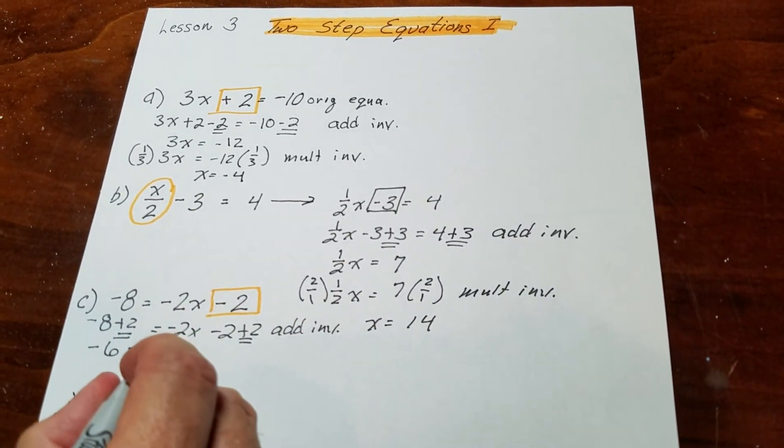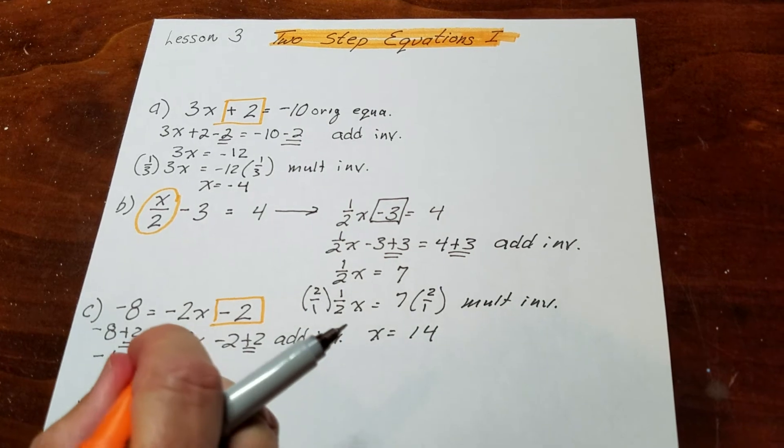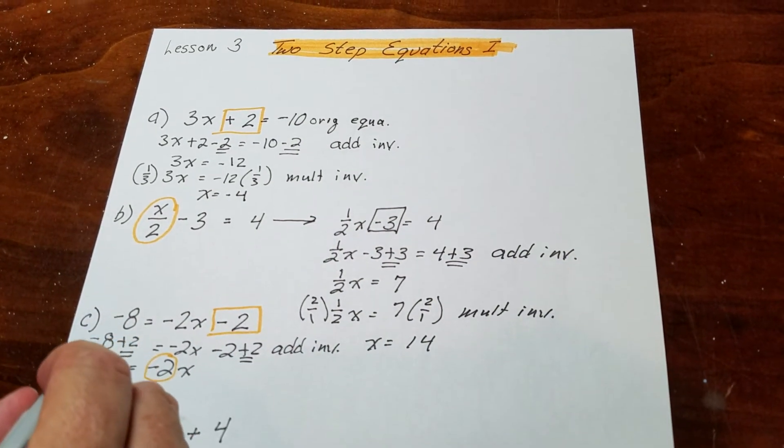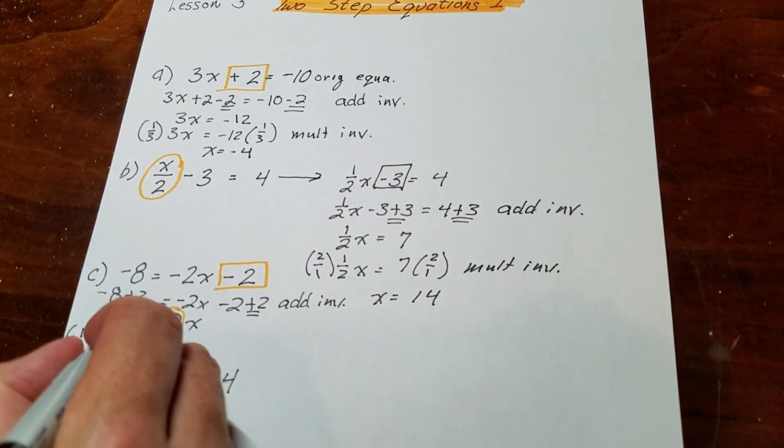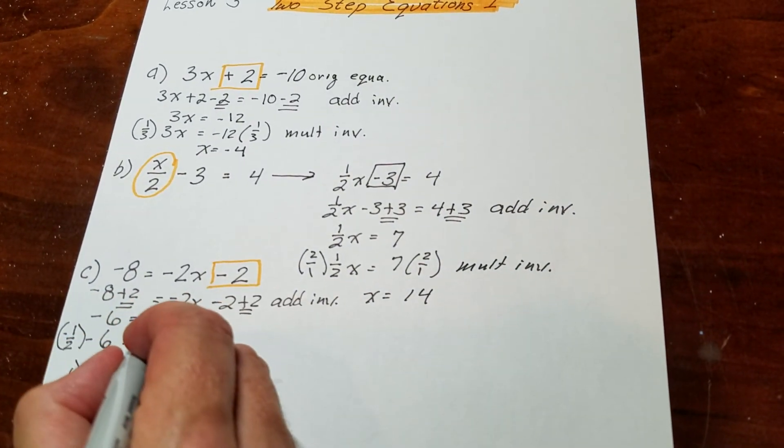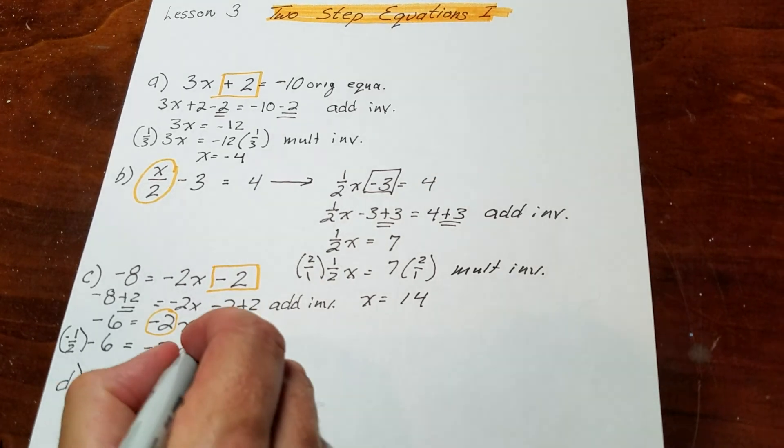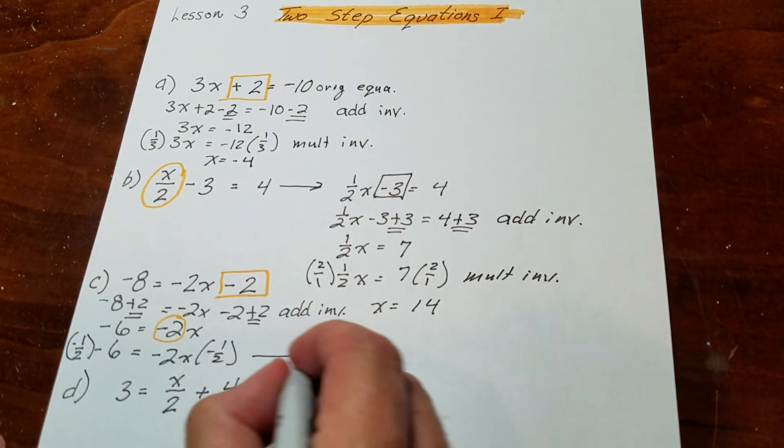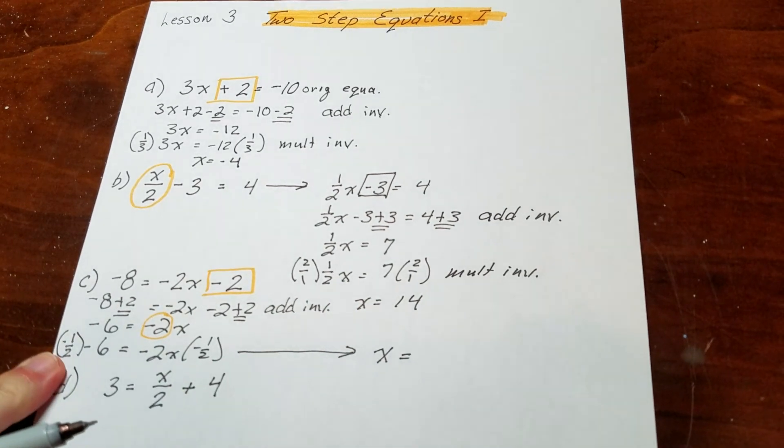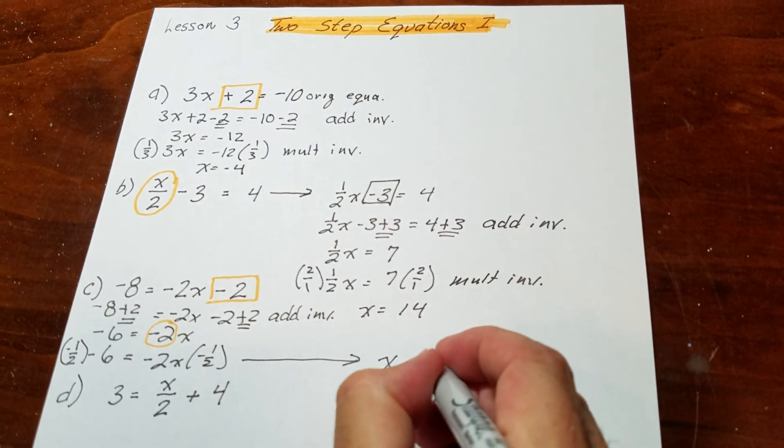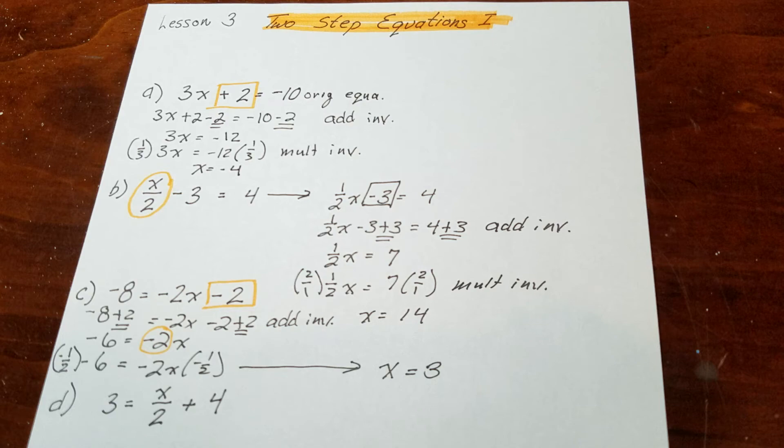And then I'm going to get rid of this 2. Remember that if that 2 is negative, the inverse is going to be negative. So I'm going to multiply that times minus 1 half. Negative 2 times negative 1 half: x would be equal to, 2 into 6 is 3, and that's the answer.